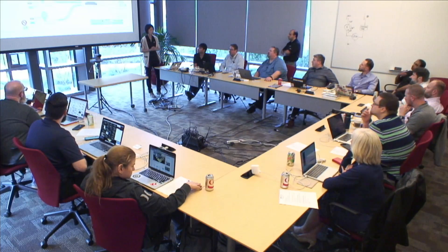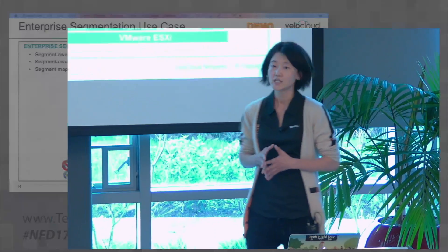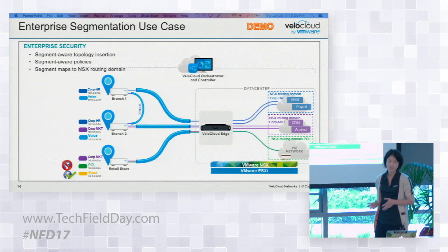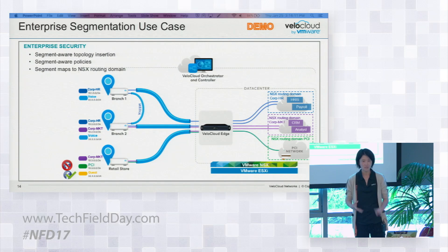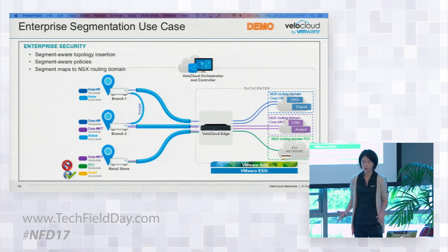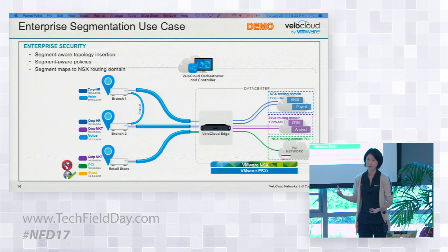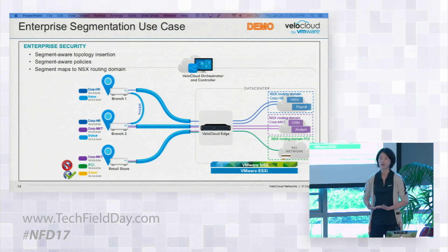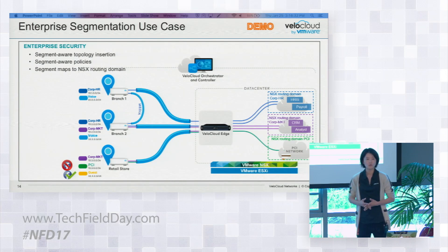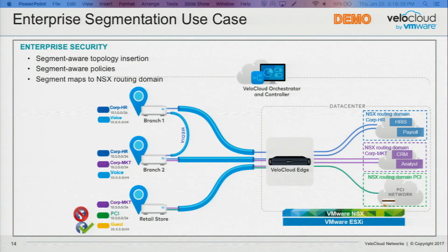Before we jump into the demo, let's quickly go over three use cases we want to bring up for the enterprise world as well as the service provider world that we have seen in the field. First, in the enterprise world — segmentation. What you are seeing here is a topology typically seen in the retail industry, where you have branch offices and retail stores distributed across the country or globe. You also have a data center which is centralized to carry different applications, or it can be a regional hub used as a transit point for all traffic. Different segments will be created for different reasons: line of business, separation of services like voice, as well as security requirements like PCI.